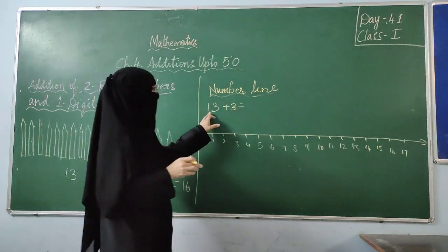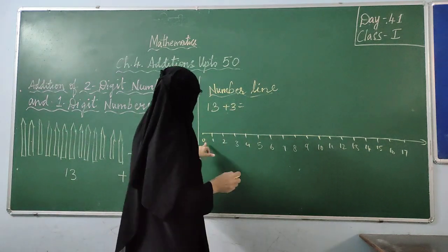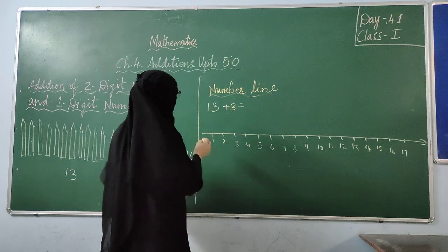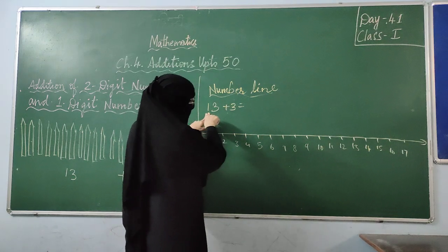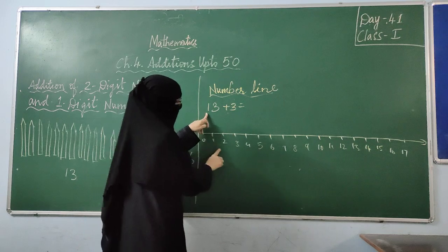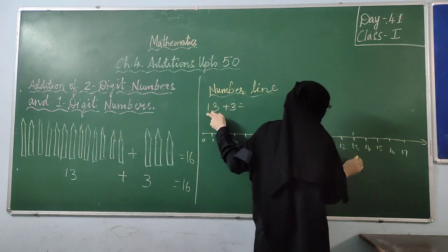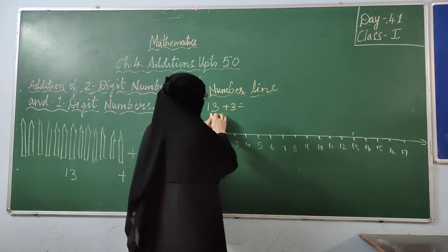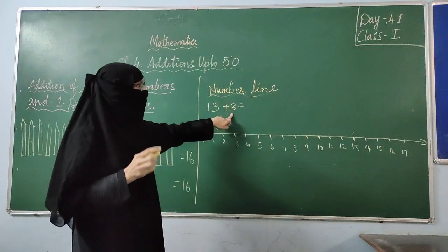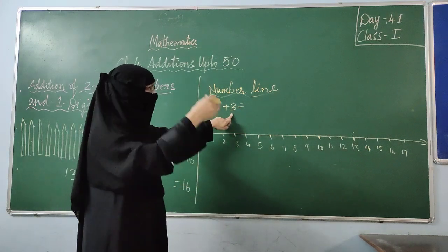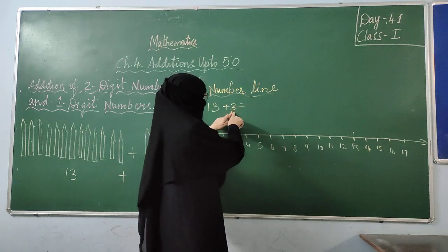Now, number line. In number line, we are going to start from 0. Now, we have to take 13. Where is 13? Here it is. After 13, how much we have to take? We have to jump 3 steps forward. 3 is given here.